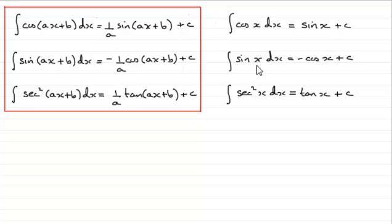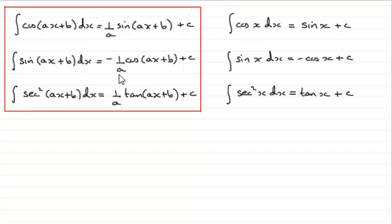The integral of sin(x) is minus cos of the same angle x. So if we integrate sin(ax + b), we get minus cos of that angle (ax + b), but we have the 1 over a in front.